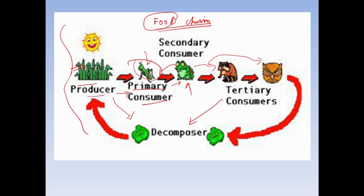Every living organism, after death, is decomposed by the decomposers. Food is transferred from the producer to primary consumer, secondary consumer, tertiary consumer, and the decomposers. This is a food chain — a chain-like relationship established among the different biotic components of an ecosystem.